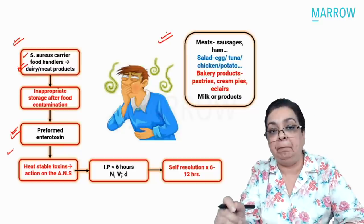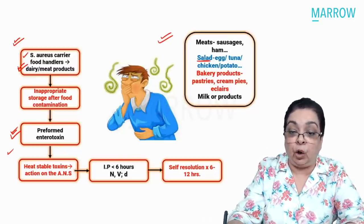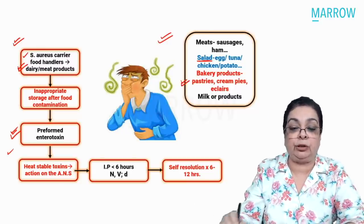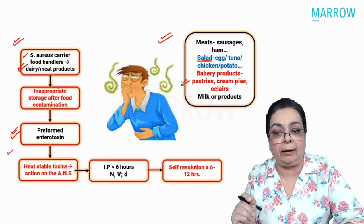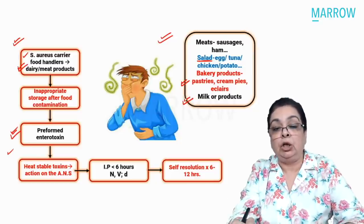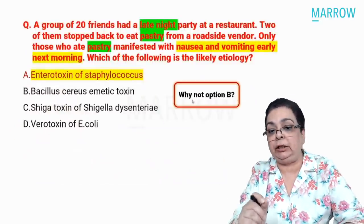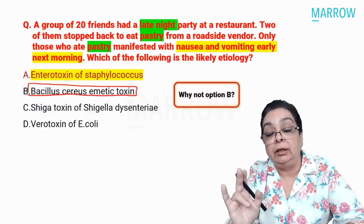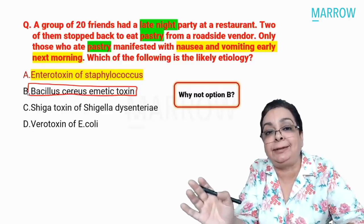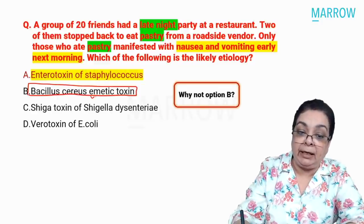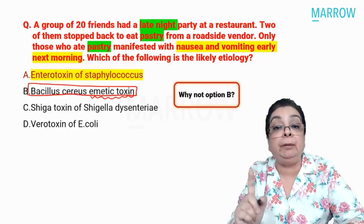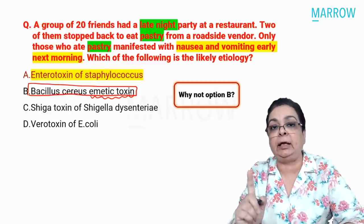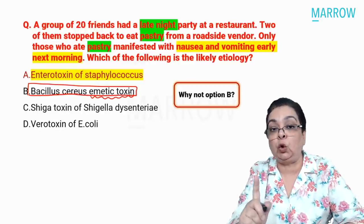Implicated foods in Staphylococcal food poisoning include meats like sausages and ham, salads (egg salad or potato salad — frequently asked), bakery products like pastries, cream pies, and eclairs, and milk products or cheeses. Bacillus cereus is not the answer because it produces two types of disease: diarrheal type (incubation 8–16 hours, implicated food is meat products) and emetic type (short incubation, but implicated food is Chinese or fried rice). Since the implicated food here is pastry, not fried rice, the answer is Staphylococcus aureus enterotoxins.